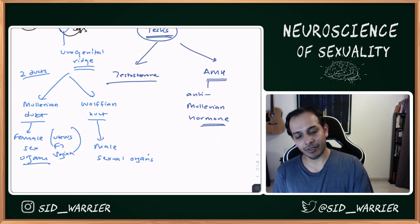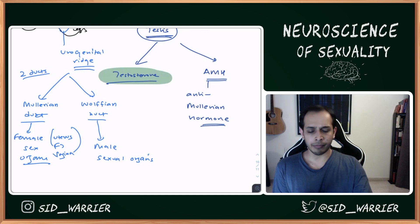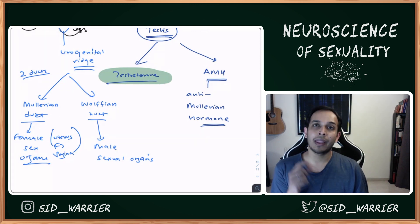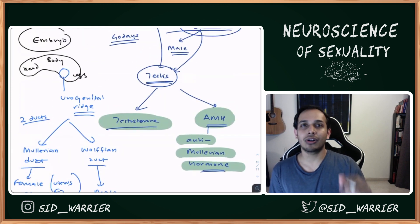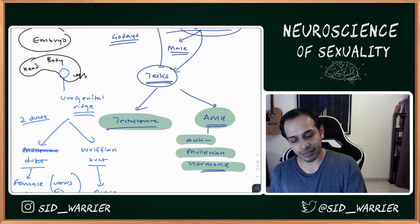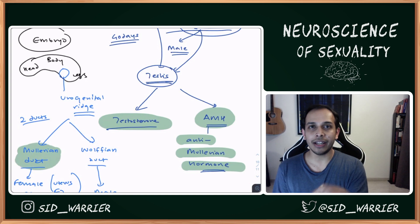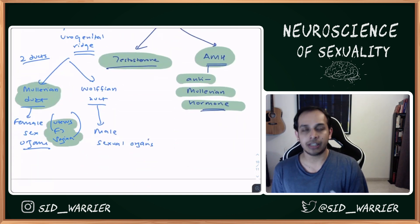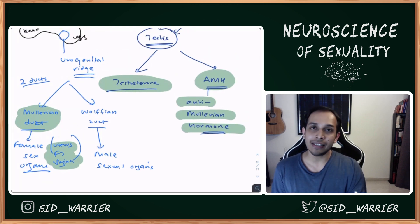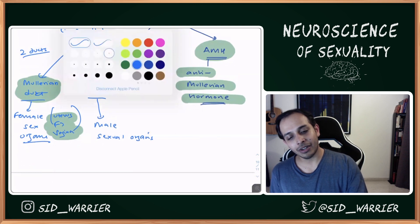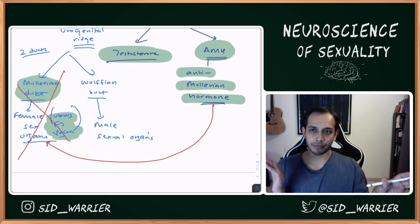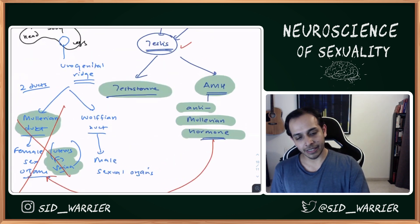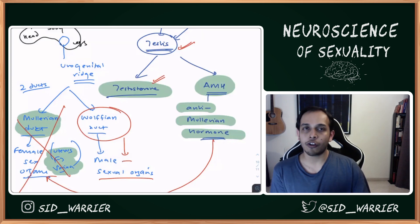When the testes releases testosterone, the male body uses it for many things. But it also releases AMH — Anti-Müllerian Hormone — because even this embryo with a Y chromosome and testes still has a Müllerian duct. You can't allow that to remain, because it would also develop a uterus, fallopian tube, and vagina, which the male embryo doesn't need. So AMH goes to the Müllerian duct and gets rid of it. What remains is the testes, testosterone, and the Wolffian duct, which then forms the penis, scrotum, and all male sexual organs.